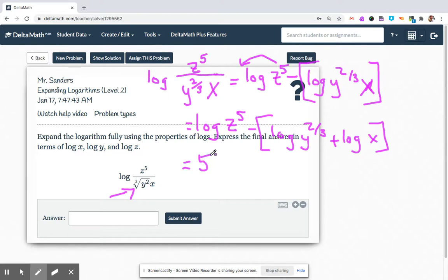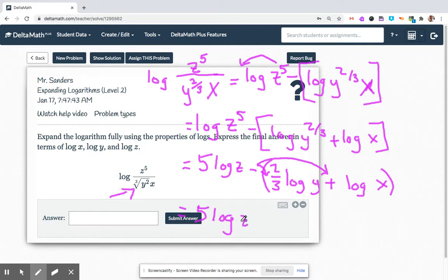Alright, so this now is a log. Let's move it in front, and then I'll distribute. Okay, so 5 log of z, exponents go out in front, minus 2 over 3 log y plus log x. We don't want to have these grouping symbols in our answer. So this negative applies to the first term and the second term. So our final answer, 5 log of z minus 2 over 3 log of y minus log of x.